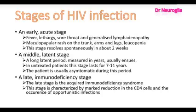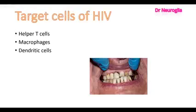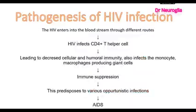The late immunodeficiency stage is the acquired immunodeficiency syndrome. This stage is characterized by marked reduction in CD4 cells and the occurrence of opportunistic infections. The target cells of HIV are helper T cells, macrophages, and dendritic cells. In pathogenesis, HIV enters the bloodstream through different routes, infects the CD4 T helper cell leading to decreased cellular and humoral immunity, and also infects the monocyte-macrophage producing giant cells, causing immune suppression predisposing to various opportunistic infections.